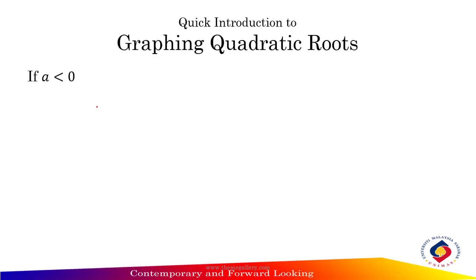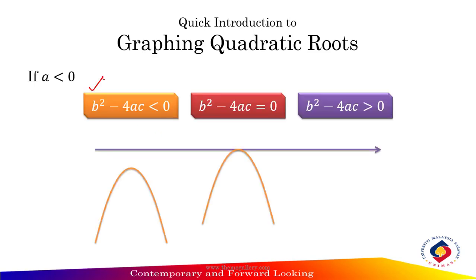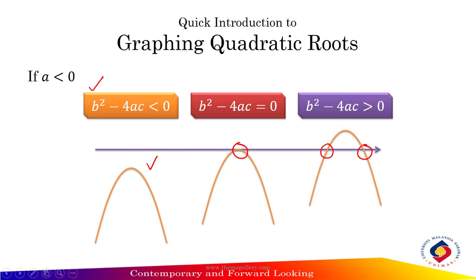And if a < 0: if b² - 4ac < 0, there is no intersection; if b² - 4ac = 0, there is one intersection; and if b² - 4ac > 0, there are two intersections.